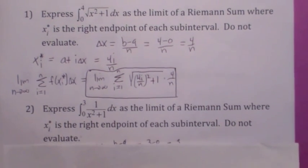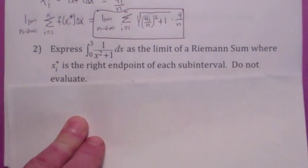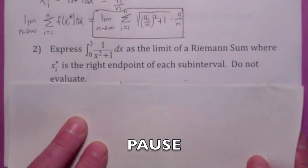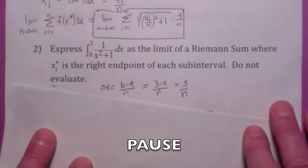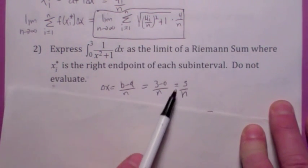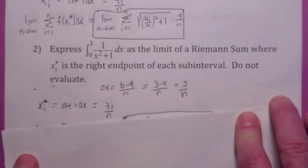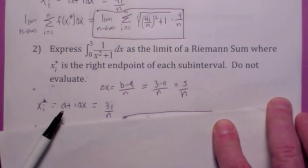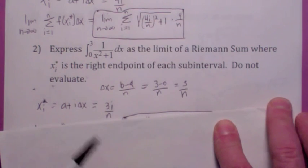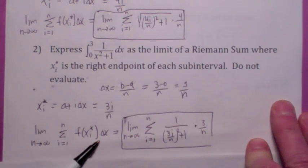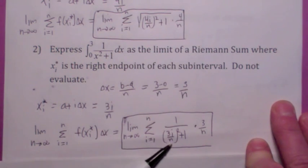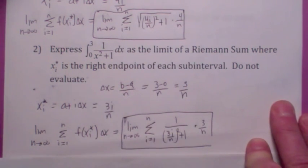Why don't you try this one? See if you can express this definite integral as a limit of a Riemann sum, where x sub i star is the right endpoint. You first compute delta x, which is b minus a over n, which looks like 3 over n. Then x sub i star, using right endpoints, is 0 plus i delta x, giving you 3i over n. The definite integral from 0 to 3 of 1 over x squared plus 1 dx becomes this limit: you plug in 3i over n for x sub i star, giving 1 over (3i over n) squared plus 1, times delta x which is 3 over n.